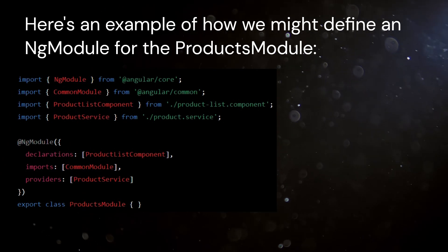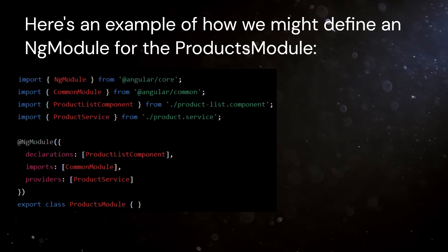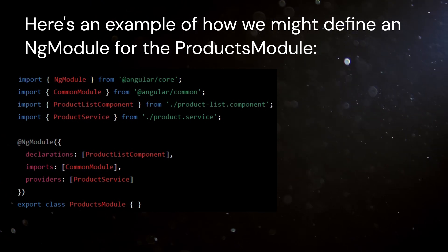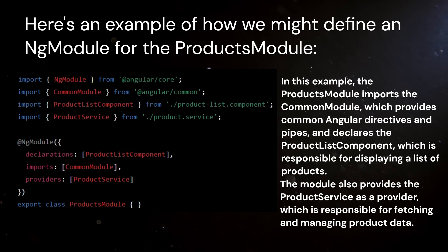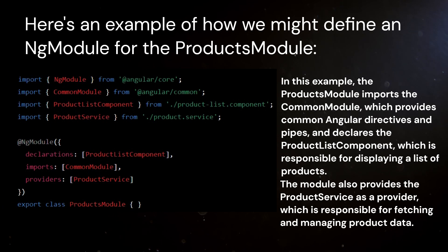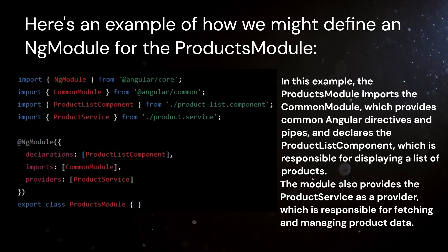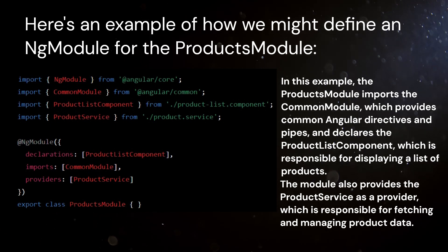In this example, the products module imports the CommonModule, which provides common Angular directives and pipes, and declares the ProductListComponent, which is responsible for displaying a list of products. The module also provides the ProductService as a provider, which is responsible for fetching and managing product data.